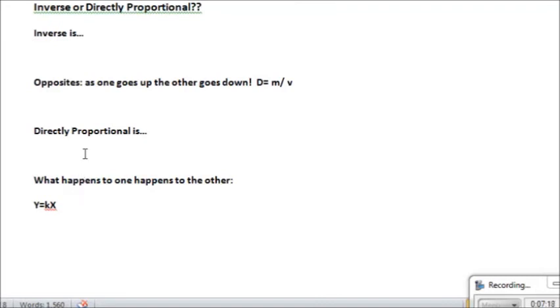Directly proportional means that what happens to one thing happens to the other. In a multiplication problem, if we increase the value of x, the value of y goes up. That's the difference between those two.